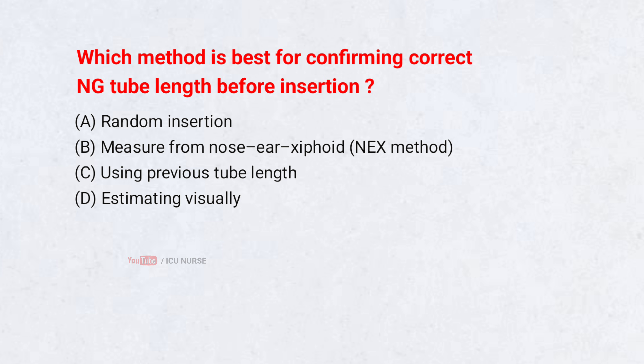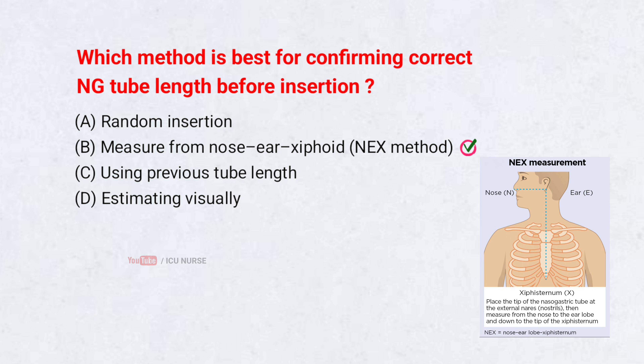Which method is best for confirming correct NG tube length before insertion? A. Random insertion. B. Measure from nose, ear, xiphoid — the NEX method. C. Using previous tube length. D. Estimating visually. Correct answer: B. The NEX measurement ensures the tube reaches the stomach without entering the airway.